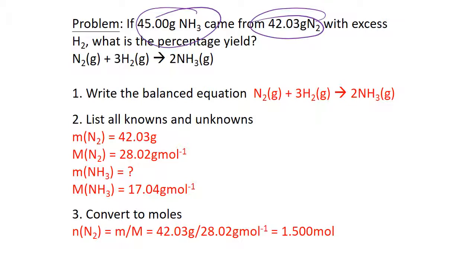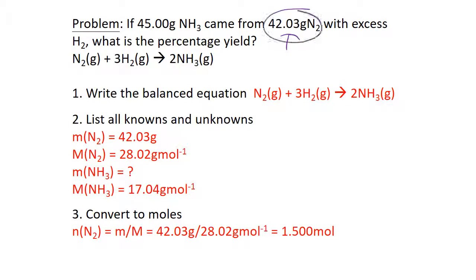To do that you have to convert to moles. The number of moles of nitrogen is mass of nitrogen from the question divided by the molar mass from the periodic table, 28.02, which gives you one and a half moles.